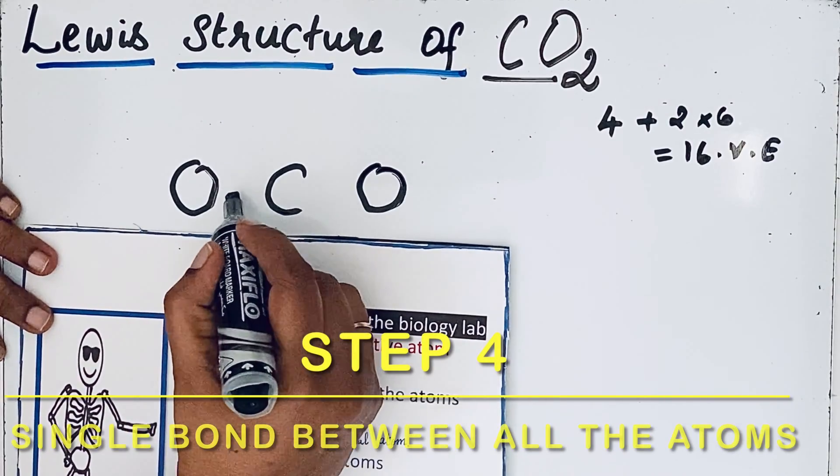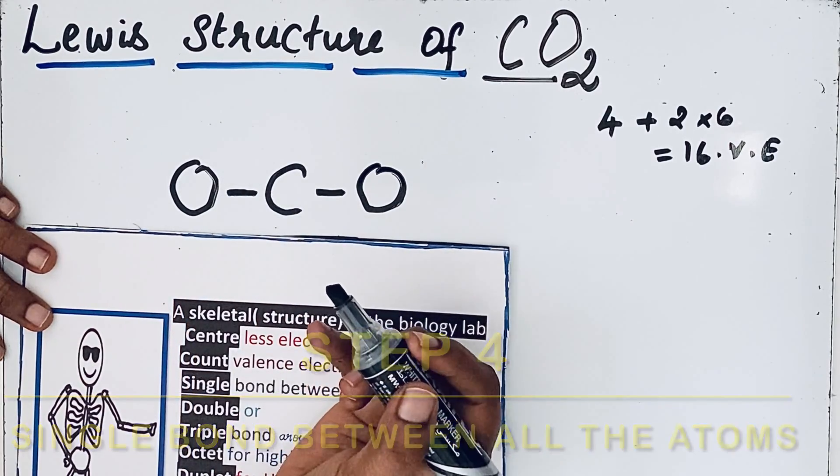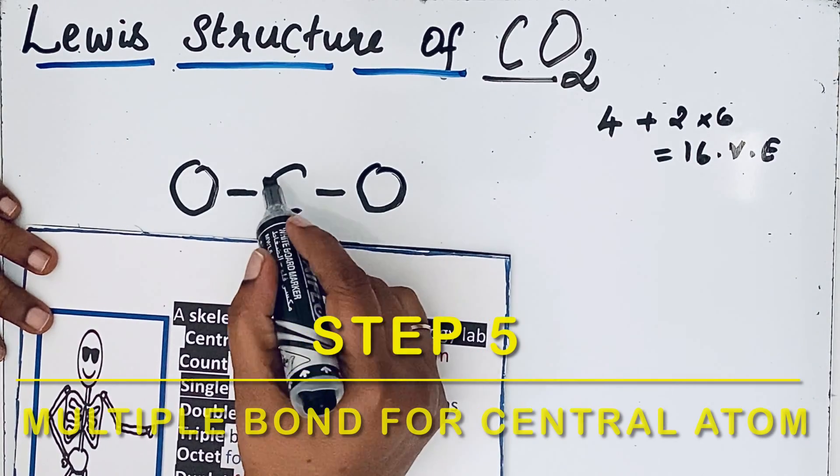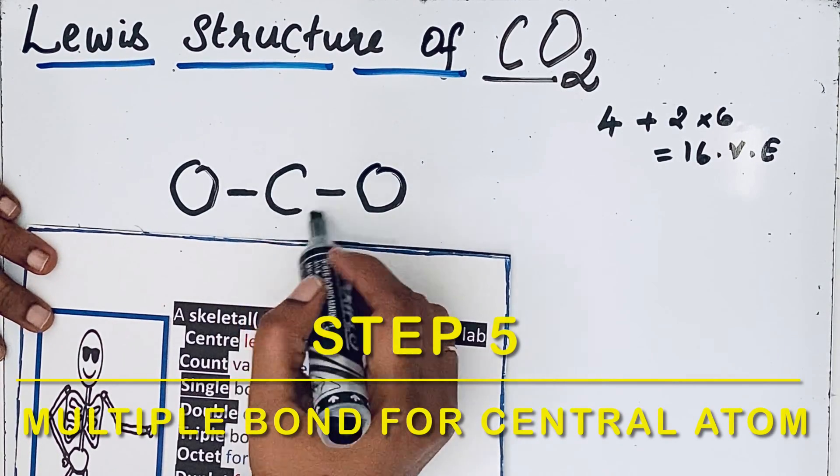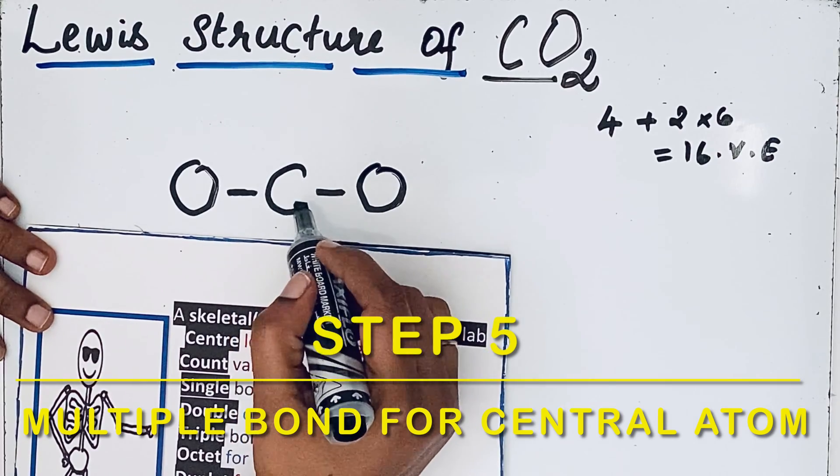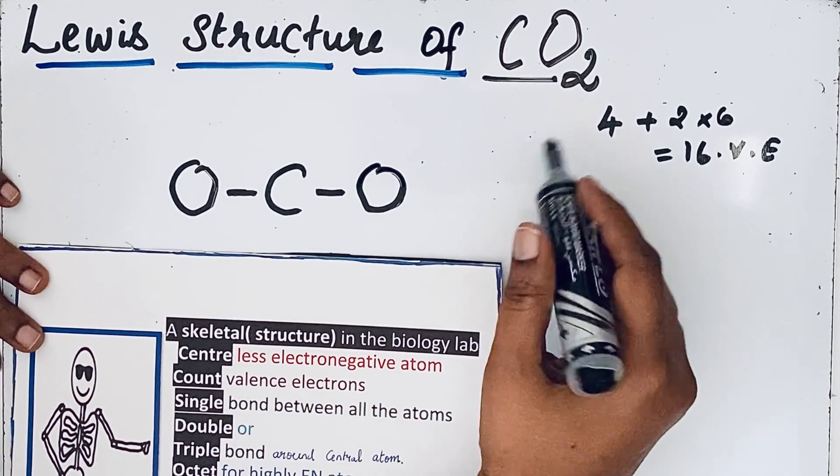Single bond between all the atoms. So draw the single bond. Single bond means two electrons involved in the bond formation. Then double or triple bond around central atom. Why do we draw that double or triple bond around the central atom? It means to give that octet for the central atom. Octet gives stability for that atom of an element.